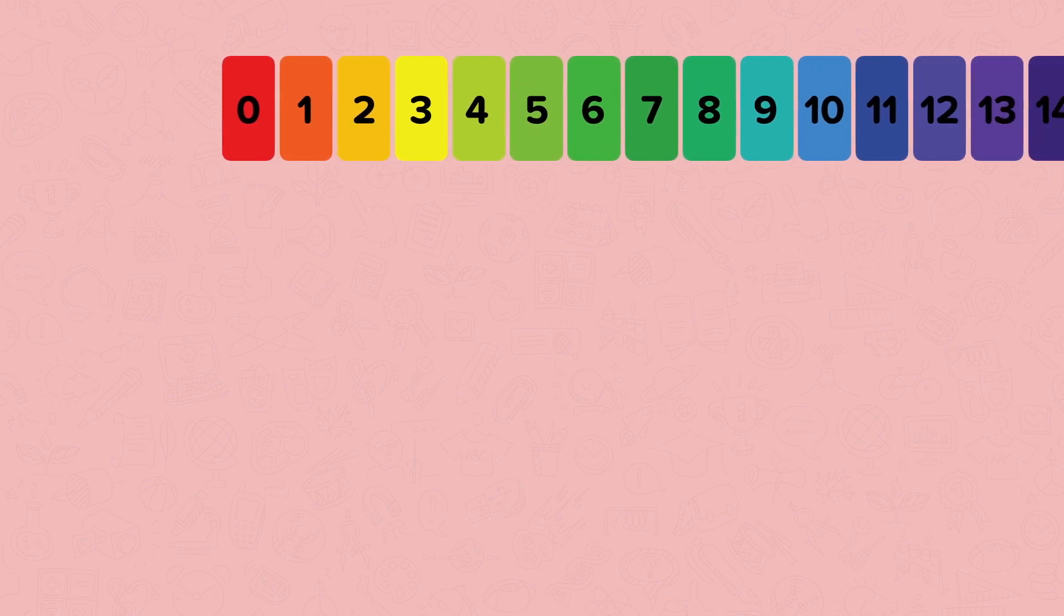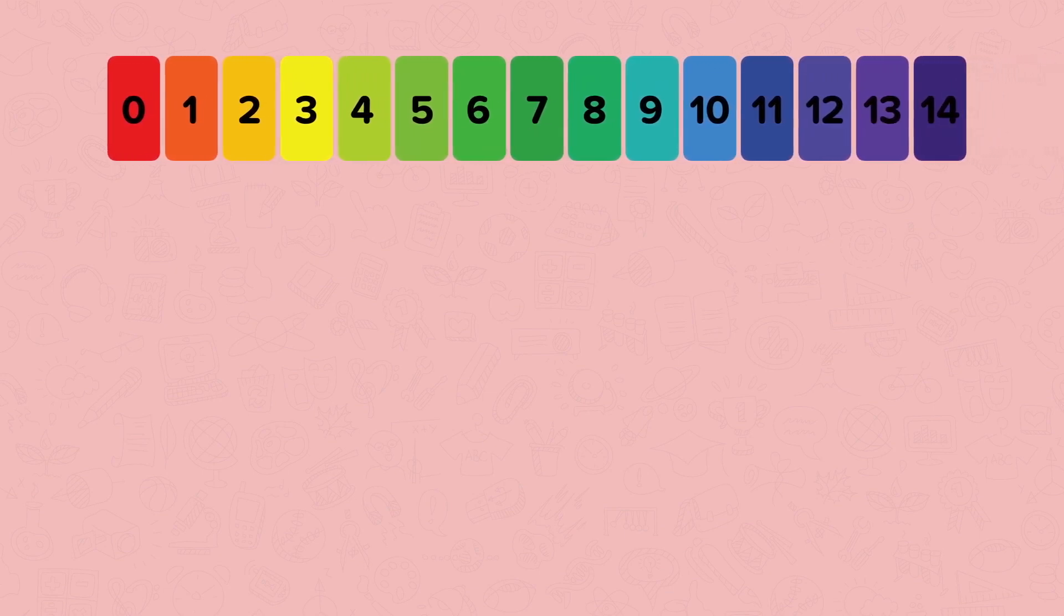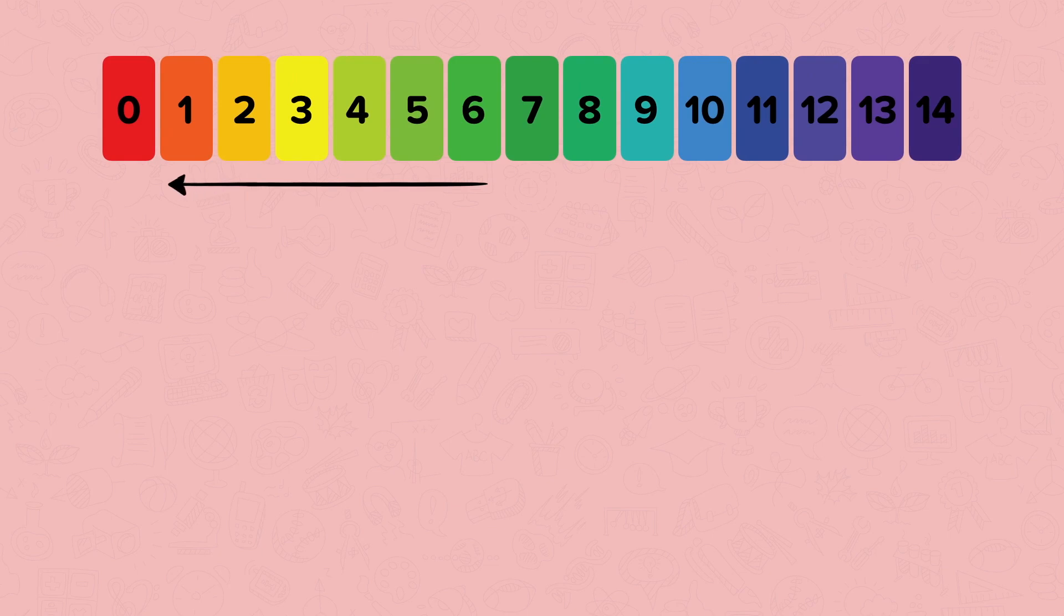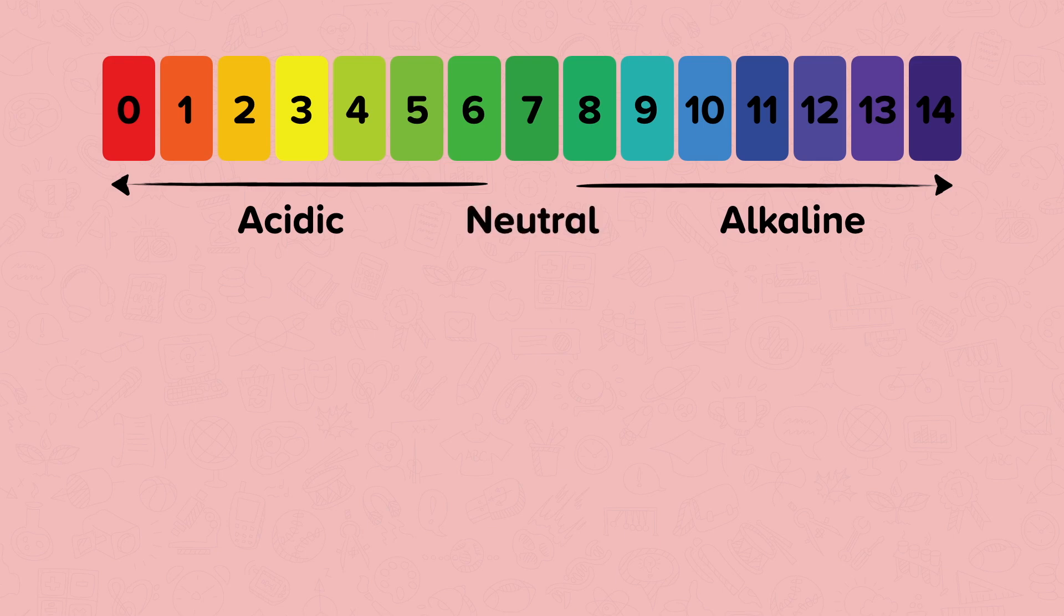Universal indicator can give an approximate value for pH using a color chart matched with specific pH numbers from pH 0 to pH 14. Solutions with a pH below 7 are acidic. Solutions with a pH above 7 are alkaline. And solutions with a pH of 7 are neutral.